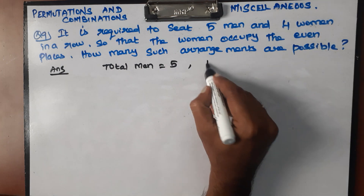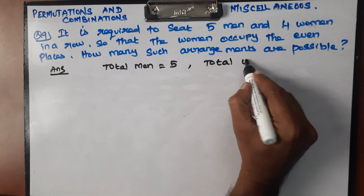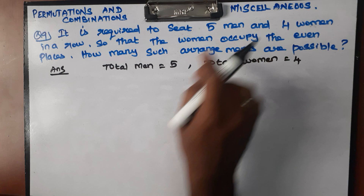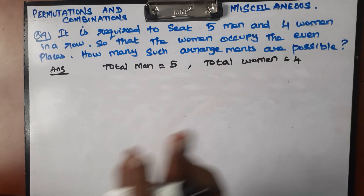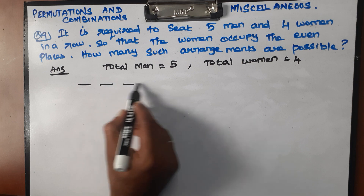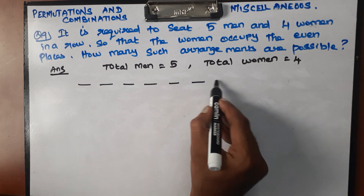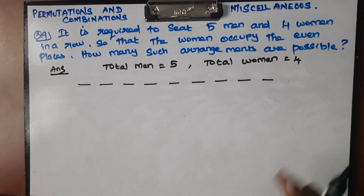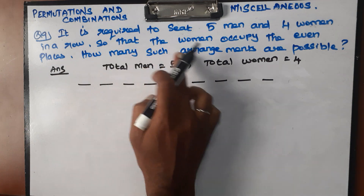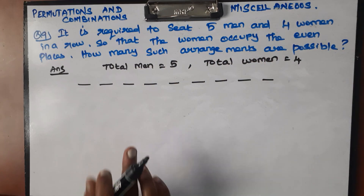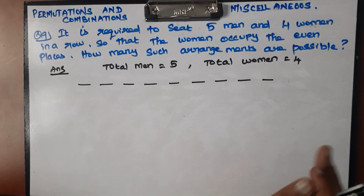Total women is equal to four. The total number of people is nine — positions one through nine. The women occupy the even places: two, four, six, eight.